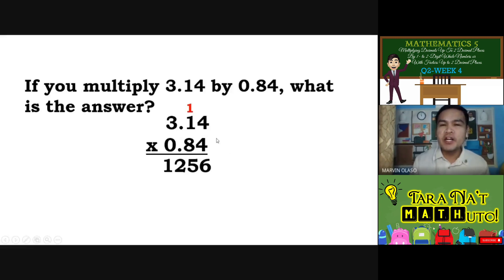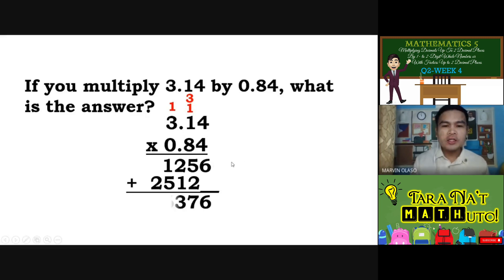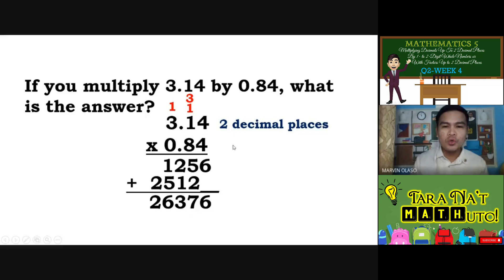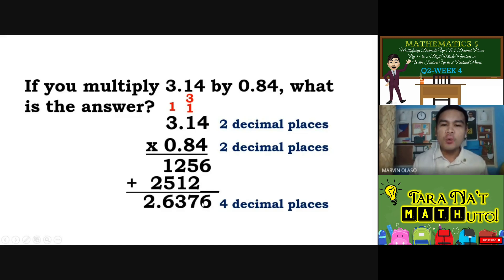Let's multiply the first partial product: 4 times 4 equals 16 carry 1, then continue. The second partial product by 8: 4 times 8 equals 32 — bring down 2, carry 3. 8 plus 3 equals 11, carry 1. 24 plus 1 equals 25. We have now the sum: 26,376. Then count the decimal places. First factor has 2, second factor has 2. All in all, we have 4 decimal places. Put the decimal point 4 places from the right — going to the left: 1, 2, 3, 4.